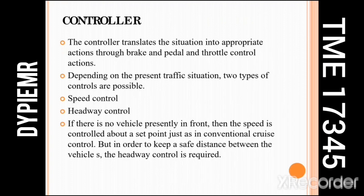The controller is the next device in the ACC system. It takes input from the sensor, which gives it the traffic situation information. According to that information, the controller controls the brakes and throttle of the car. The controller can be of two types: if no vehicle is ahead, speed control is used; and headway control is used to keep a safe distance between two vehicles if there is a vehicle ahead.